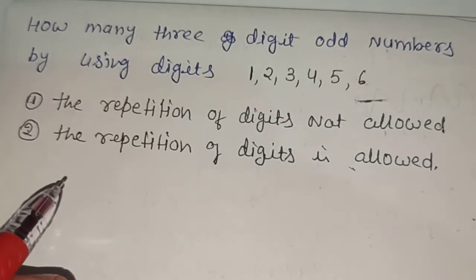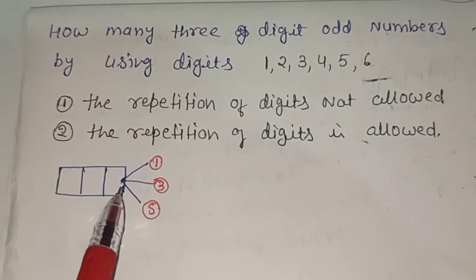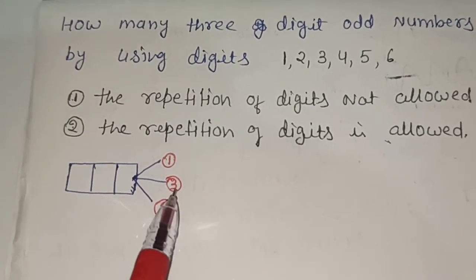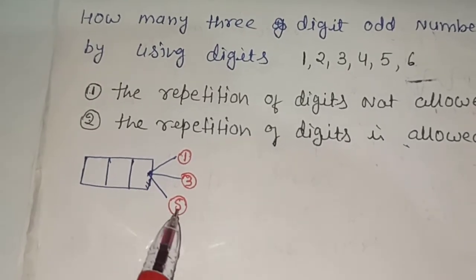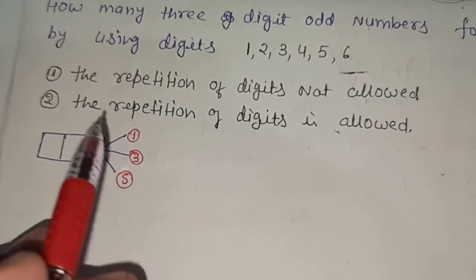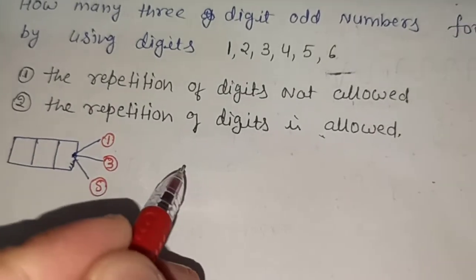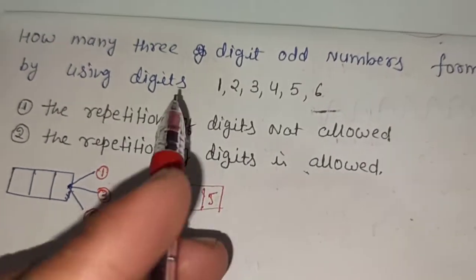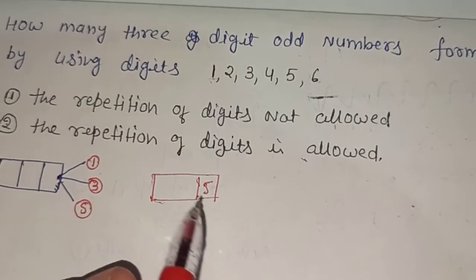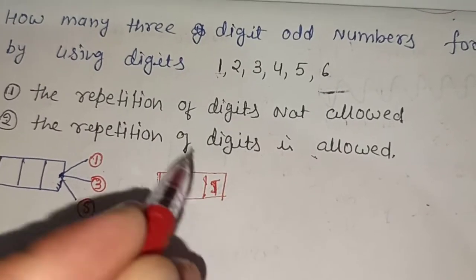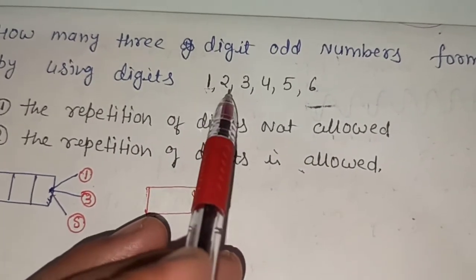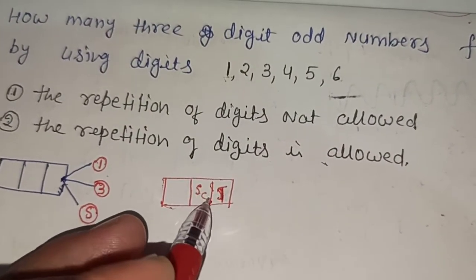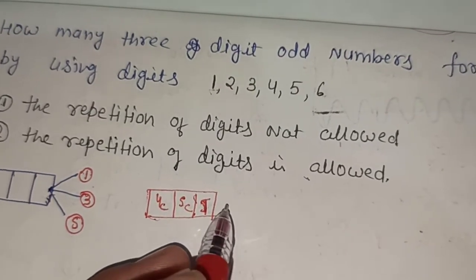Let me start this problem. A number is odd if the ones place digit is odd — so substituting 1, 3, or 5 in the ones place makes it odd. Suppose we place 1 in the ones place — there is only one choice for that place, so the remaining five digits can fill the hundreds place, giving five choices, and four choices for the tens place.